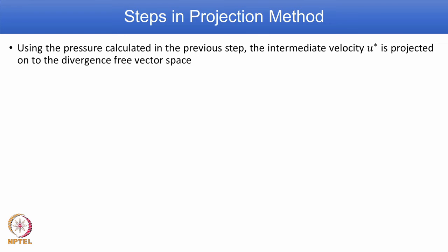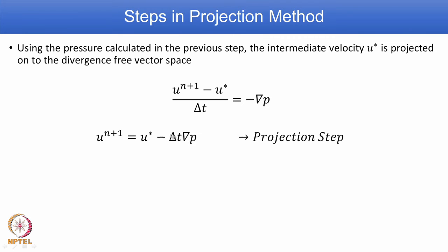Using the pressure calculated from the Poisson equation, we get the pressure field everywhere. It is worth noting that the Poisson equation is an elliptic equation and we need boundary conditions prescribed on all sides. We then project the intermediate velocity u* onto the divergence-free vector space: u^(n+1) − u*/Δt = −∇p, giving the final corrected velocity u^(n+1) = u* − Δt·∇p. This is called the projection step.